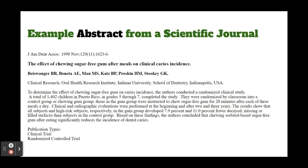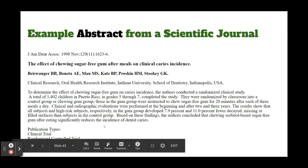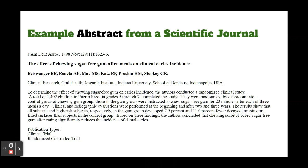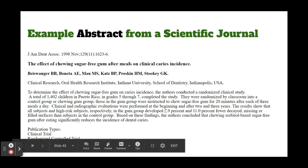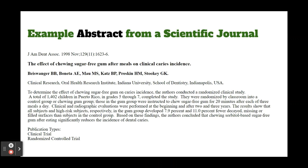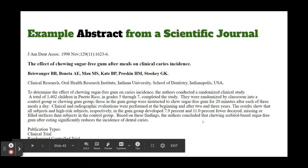Here's an example abstract from a scientific journal. This was published in 1998, and you can see what it's about — there's a brief summary. They tell you how many children they were testing, the age of the children, what they did, and then they summarize the results. It's short, it's to the point, and if you were more curious you would continue to read the rest of the article.